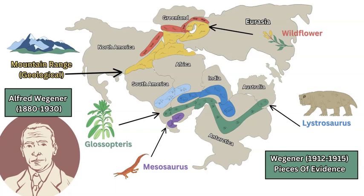Parts of his evidence included fossil records of various plants and animals that lived around 250 million years ago, around the time that Alfred Wegener suggested that these continents were no longer separated by large distances and oceans but were connected. The evidence includes various lizards like Mesosaurus or Lystrosaurus, wildflower plants, and also a plant in South America and Africa called Glossopteris.